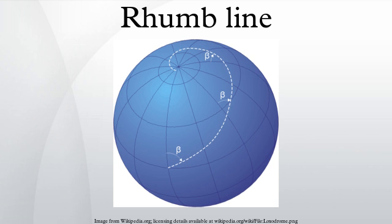On a north-south passage the rhumb line course coincides with a great circle, as it does on an east-west passage along the equator. On a Mercator projection map, a rhumb line is a straight line. A rhumb line can be drawn on such a map between any two points on Earth without going off the edge of the map.